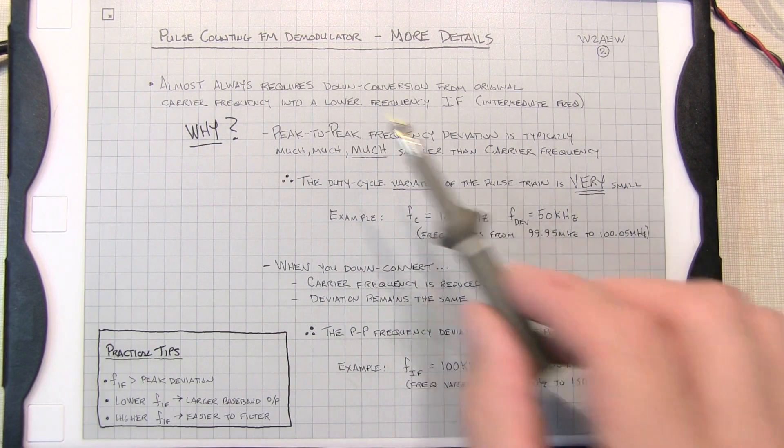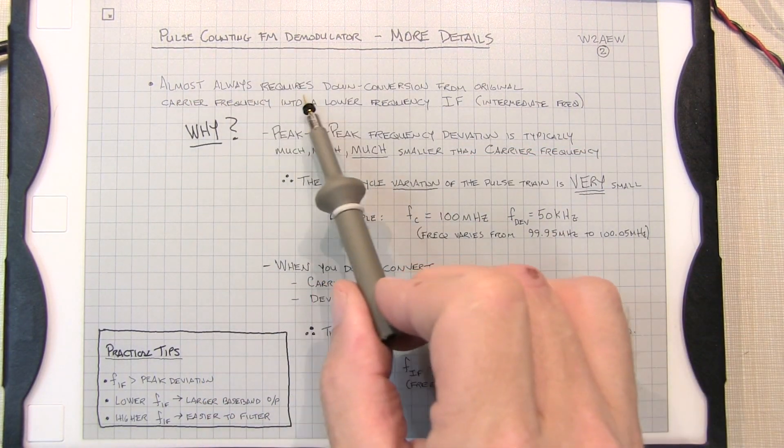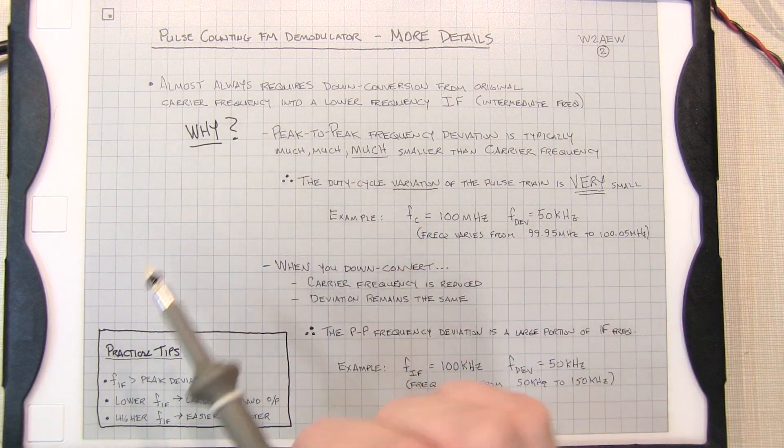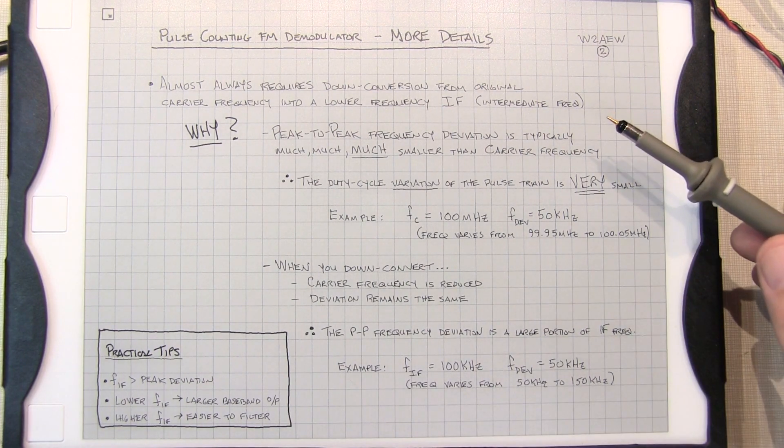Let's take a look at a few more details of the pulse counting FM demodulator application. Now we almost always require a down conversion from the original carrier frequency down to a lower frequency IF for using this detector.